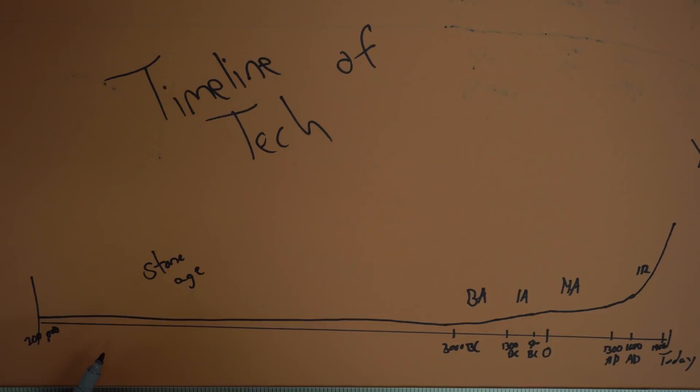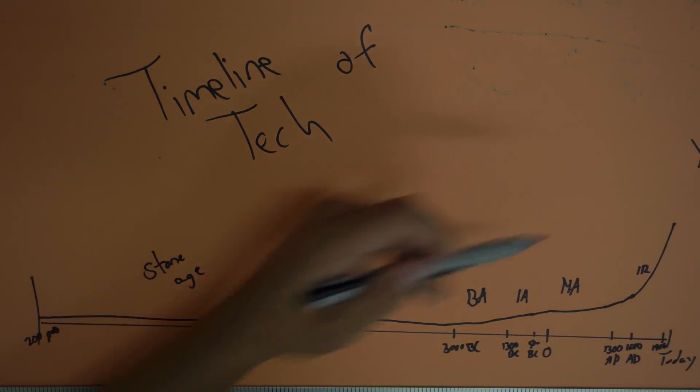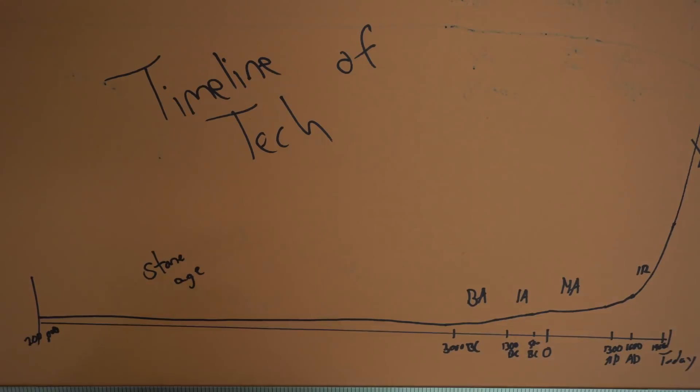And then finally, we go into the Information Age, where we live today. So from about the 1960s all the way through till today and beyond is the Information Age. And that's where computers kind of take over. And we just go off the charts as inventions and things changing.